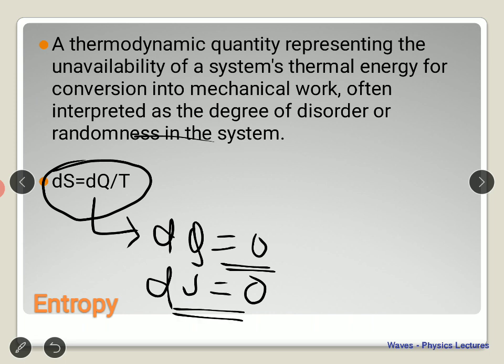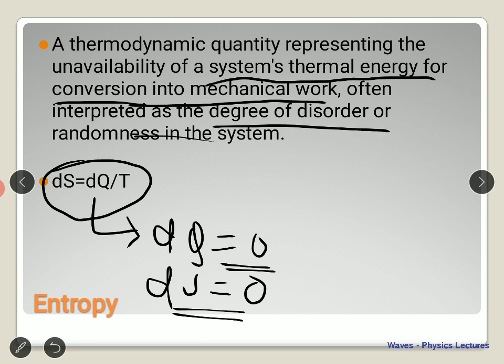Entropy is a thermodynamic quantity that represents the availability of the system's thermal energy for conversion into mechanical energy. In general, we say it measures the degree of disorderness or randomness of the system.